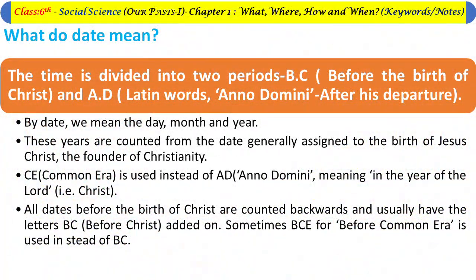The seventh topic is what dates mean. Time is divided into two periods: BC means 'Before the Birth of Christ,' and AD, from the Latin words 'Anno Domini,' means 'in the year of the Lord' (after Christ). These years are counted from the date generally assigned to the birth of Jesus Christ, the founder of Christianity. CE is used instead of AD, and BCE is used instead of BC. All days before the birth of Christ are counted backwards with the letters BC or BCE added.